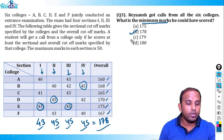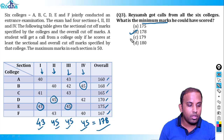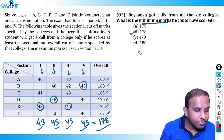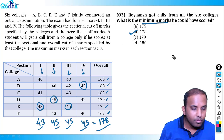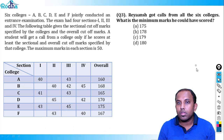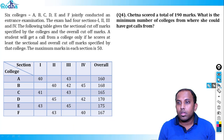So 178 is the answer for this question — the minimum marks Rayansh needs to get calls from all six colleges. Let's move to the fourth question.